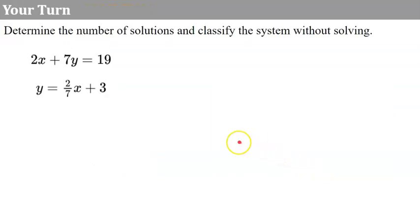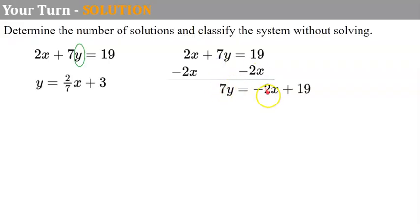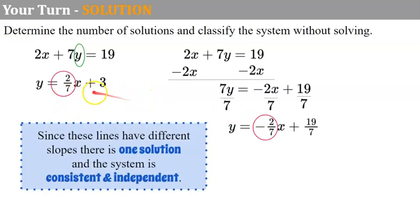One more. Go ahead and pause, determine the number of solutions and classify. The first equation is in standard form, so I subtract 2x from each side, giving 7y equals negative 2x plus 19, then divide each term by 7: y equals negative 2/7 x plus 19/7. Comparing the slopes, they are different. When you have different slopes, the lines intersect, giving one solution — the system is consistent and independent.